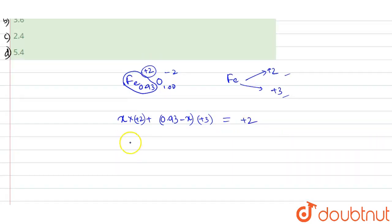So this will be 2x plus 3 into 0.93 minus 3x is equal to plus 2.